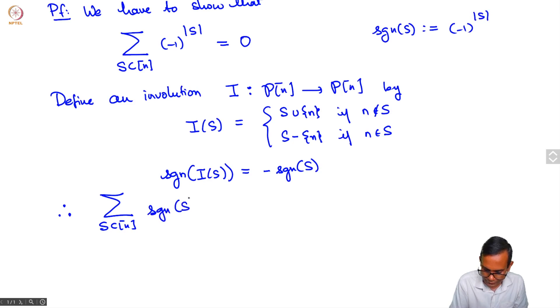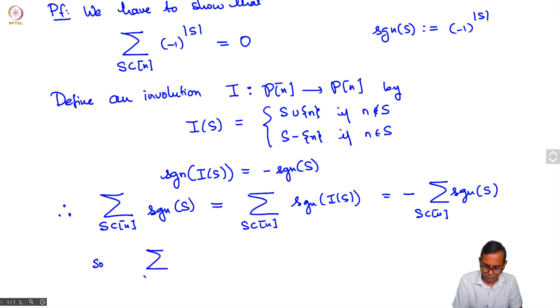The sign of s equals sum over s in n, sign of I of s, because I is a bijection. I am just replacing each s by I, but sign of I of s is minus sign of s. So the sum is equal to its own negative and hence 0, which is what we had to show.